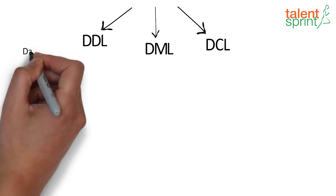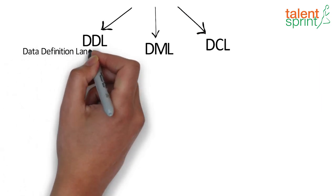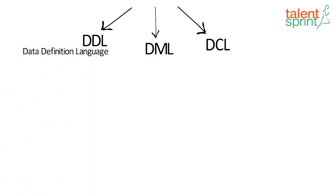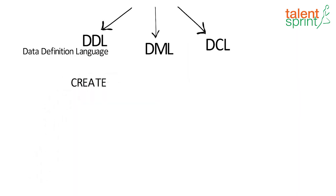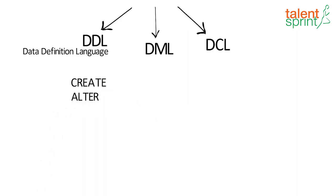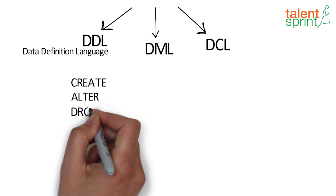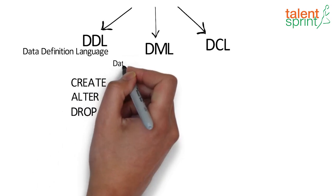DDL is the Data Definition Language. Its commands include CREATE, which creates a new table or other object in the schema; ALTER, which modifies an existing database object such as a table; and DROP, which deletes an entire table, view, or other objects in the database.